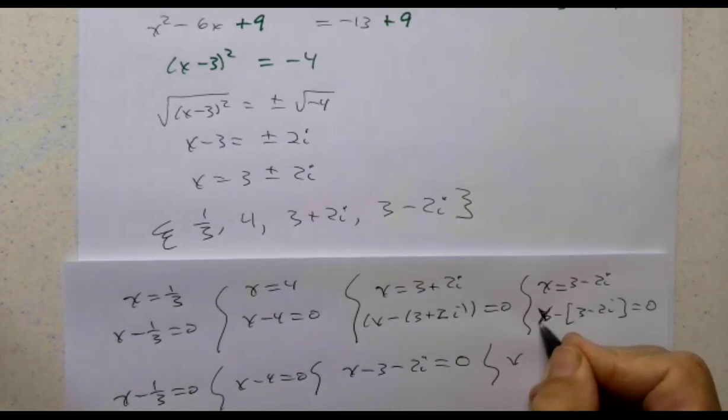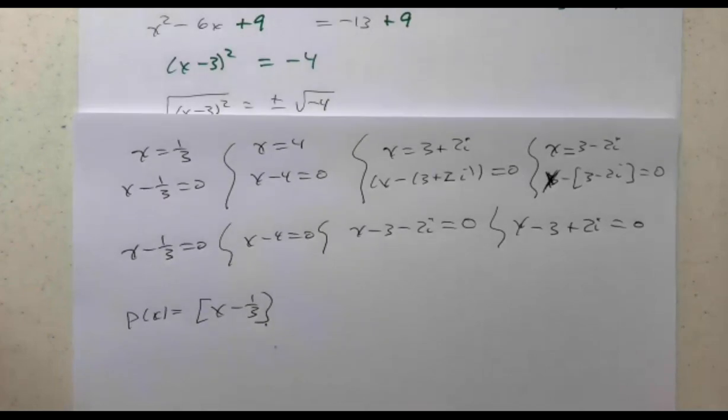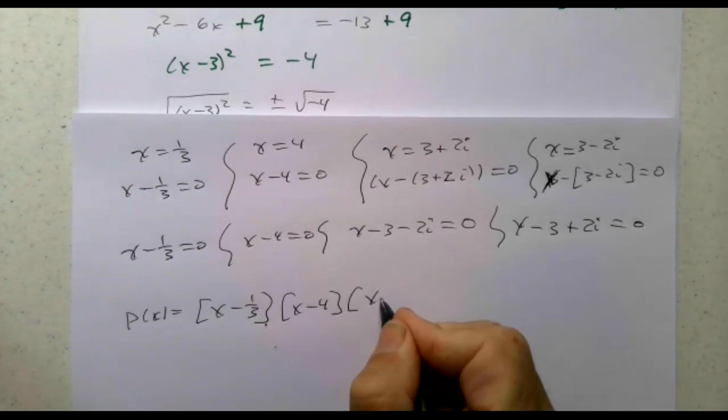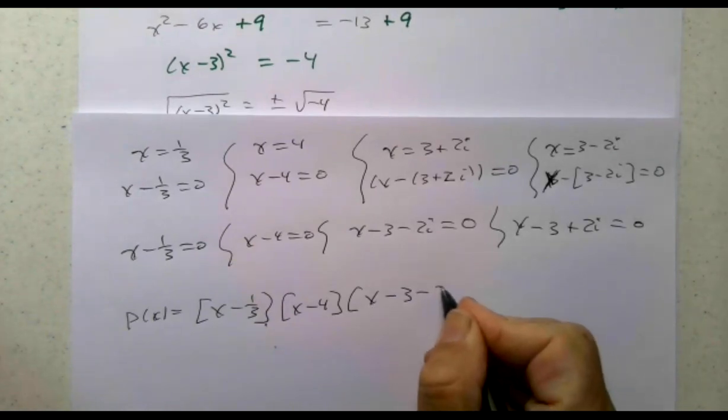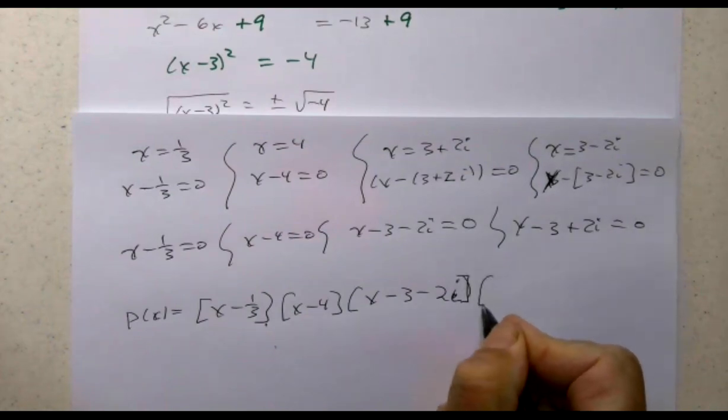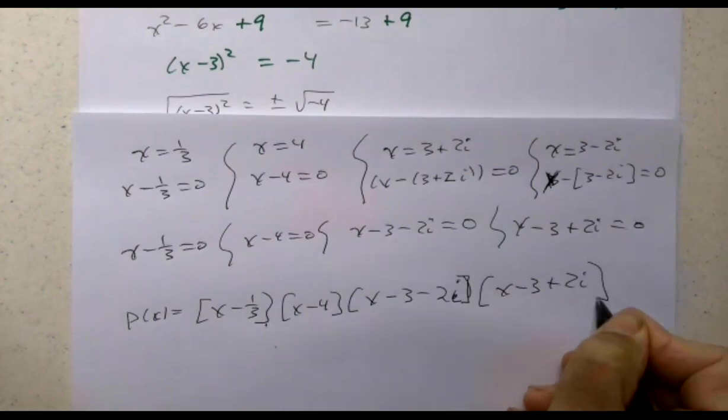x, that's an x, not a 3, x - 3 + 2i = 0. So in factored form, p(x) is (x - 1/3)(x - 4)(x - 3 - 2i)(x - 3 + 2i).